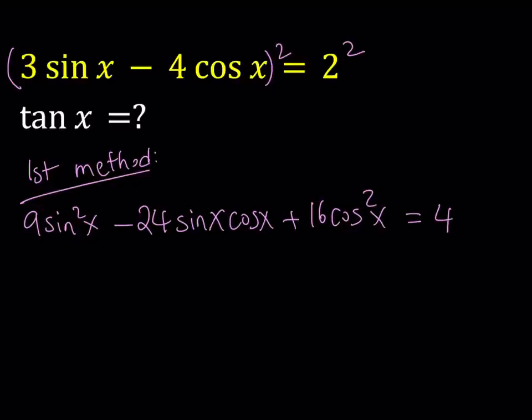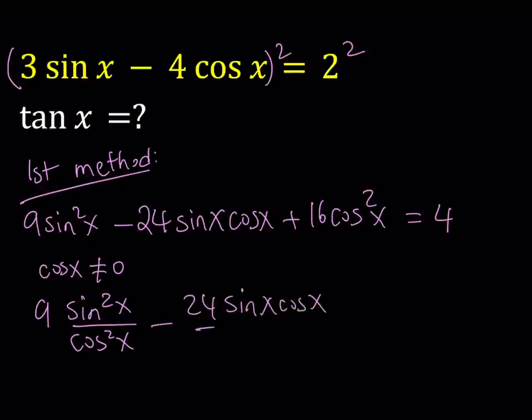I will divide both sides by cosine squared. But first, I've got to make sure that cosine x cannot be 0. If you plug in cosine x equals 0 in the original equation, you get sine x equals 2 thirds, but that doesn't satisfy the Pythagorean identity, so it's impossible. So cosine x does not equal 0. Let's divide both sides by cosine squared x. When we do, we're going to get 9 sine squared x divided by cosine squared x minus 24 sine x cosine x divided by cosine squared x plus 16 equals 4 over cosine squared x.